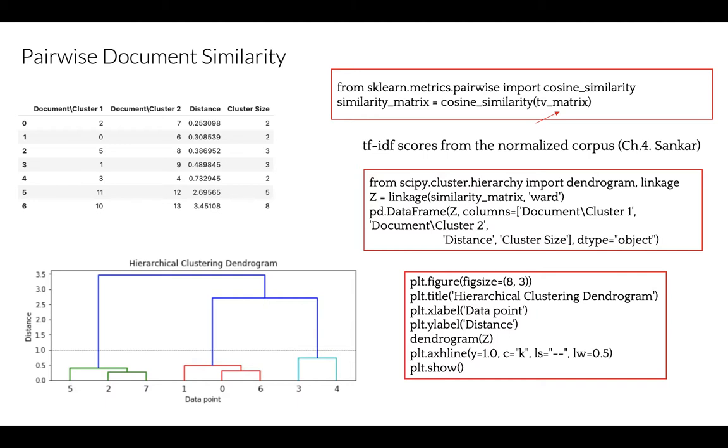Let's choose the Ward minimum variance method as our linkage criterion. At each step we'll find a pair of clusters that leads to the minimum increase in total within cluster variance after merging. We're going to use our similarity matrix that we've built using TF-IDF scores.